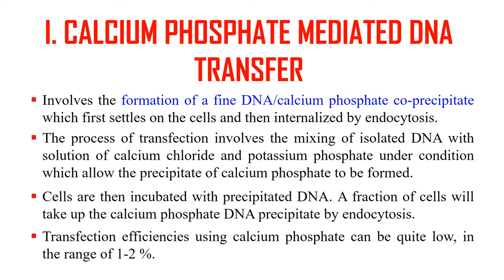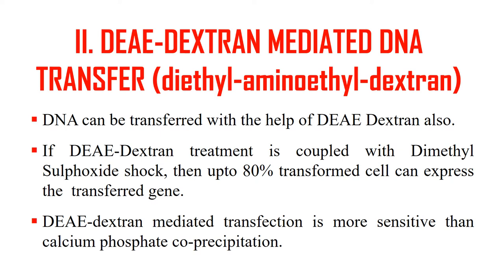The next chemical method is DEAE — diethyl-aminoethyl-dextran transfection. It is similar to the calcium phosphate co-precipitation method. In this case, the DEAE-dextran is sometimes also coupled with a dimethyl sulfoxide shock. Due to this dimethyl sulfoxide shock, about 80% of cells can express your gene or get the transferred gene. This DEAE-dextran method is more sensitive as compared to the calcium phosphate co-precipitation method.